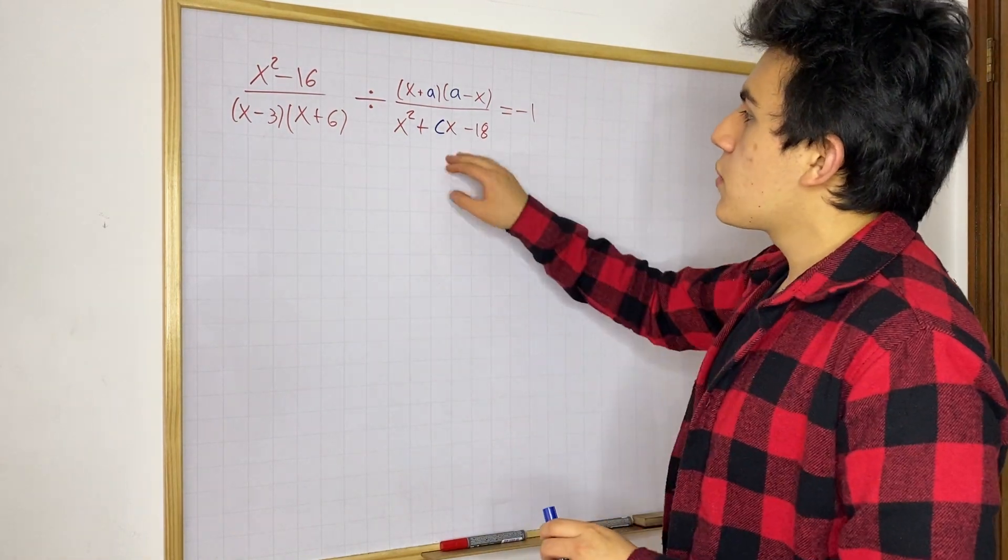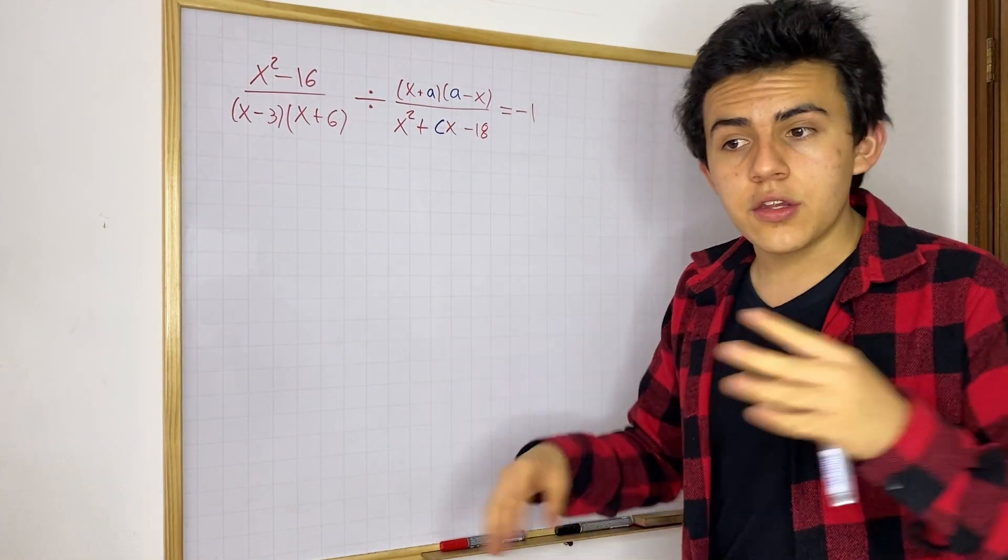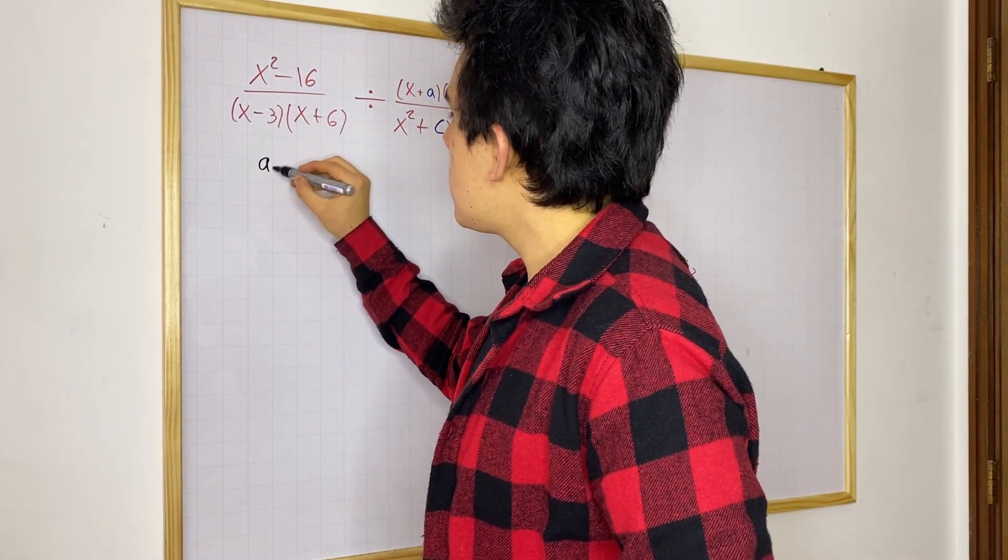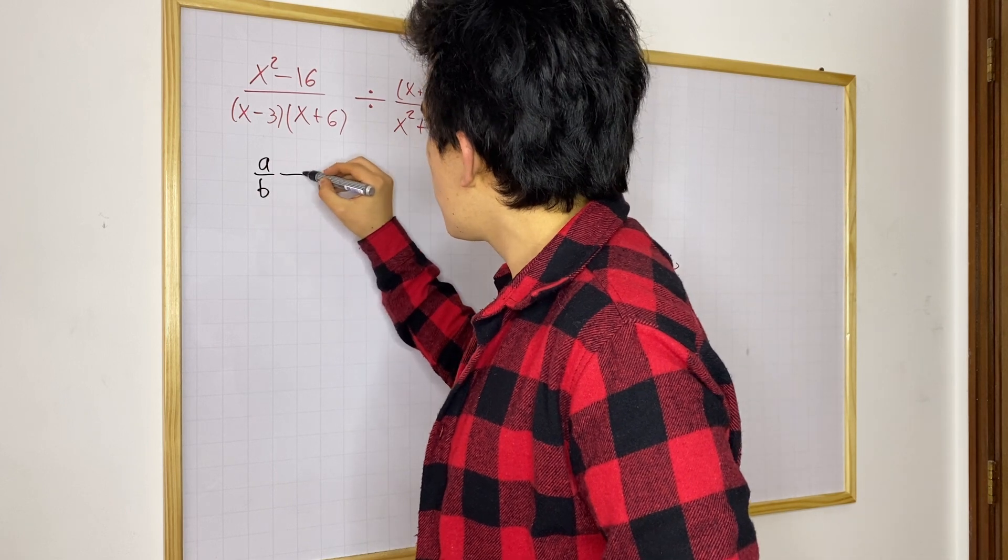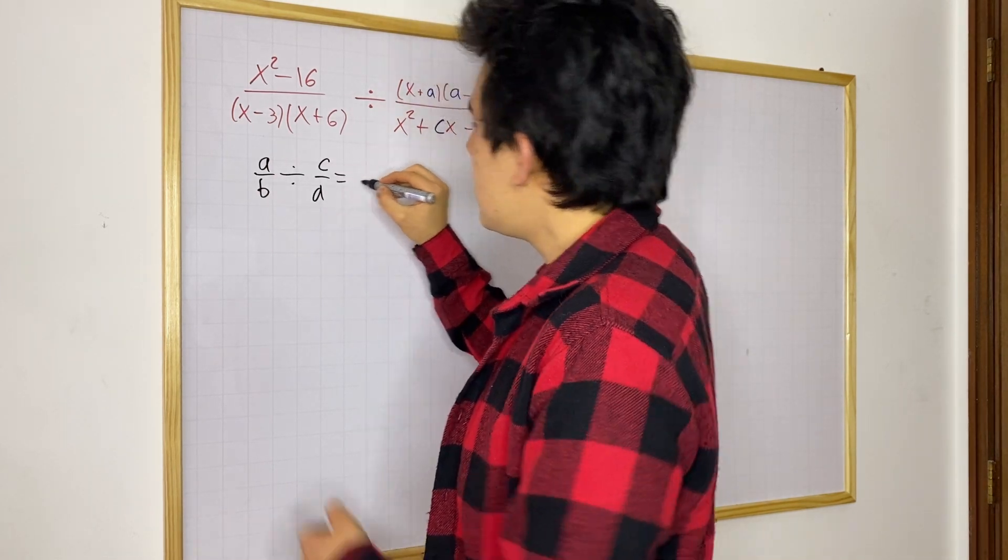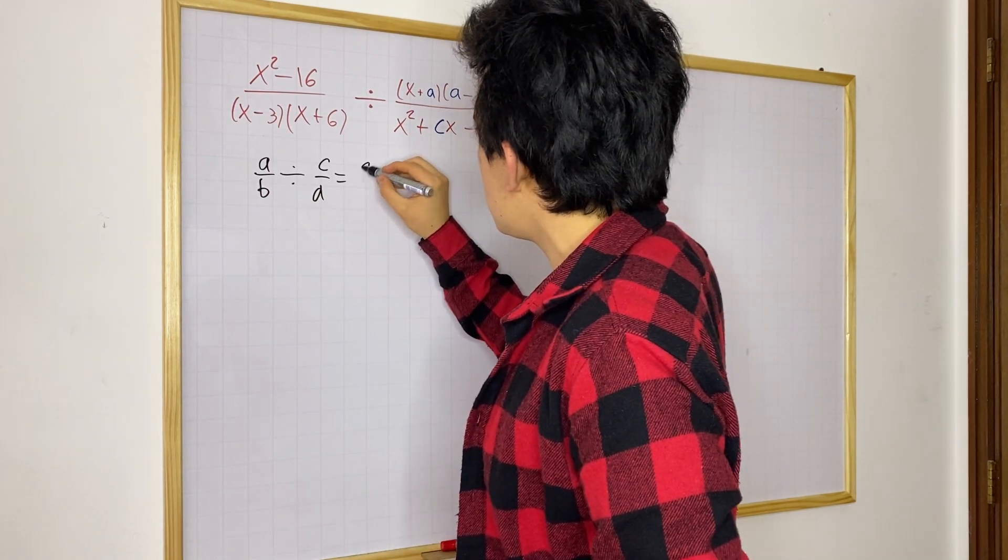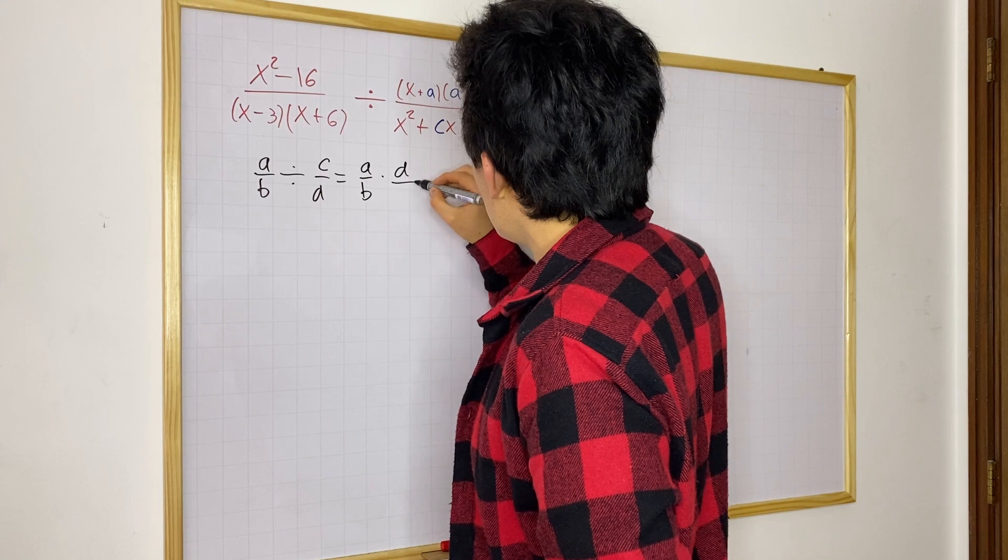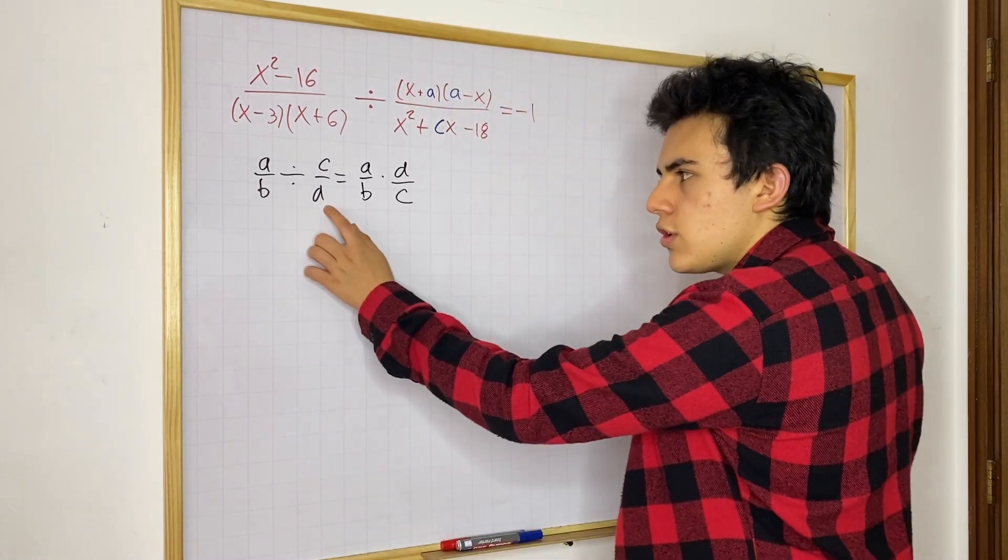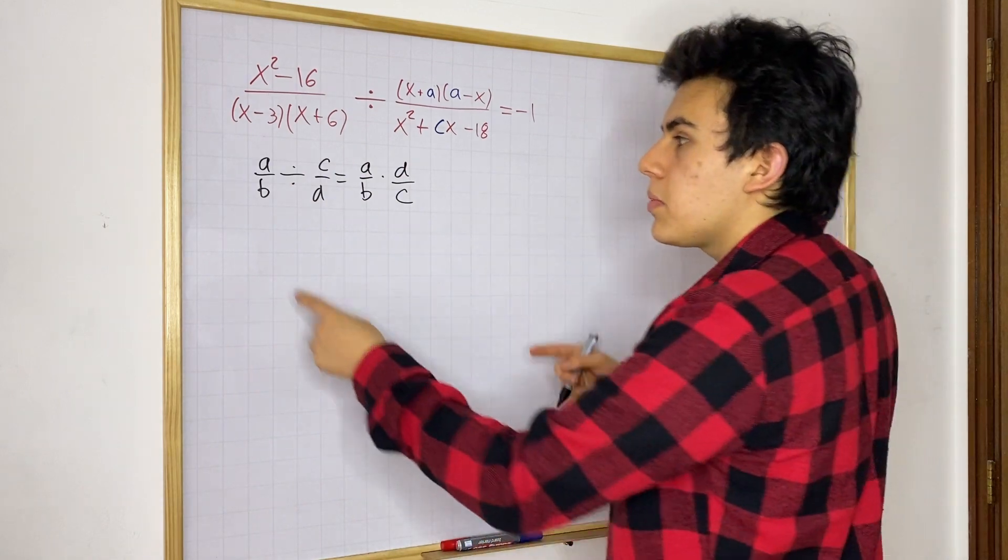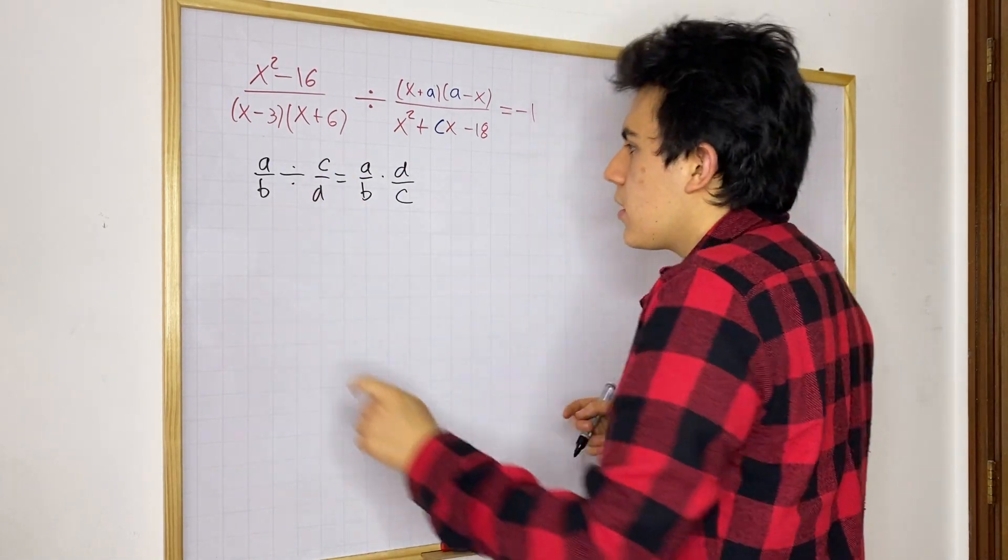So first of all, remember that if you have two fractions and you're dividing them by each other, I'm going to write this over here. If we have, for instance, A over B divided by C over D, well, this is the exact same thing as if we did A over B times D over C. You can just simply take the inverse of one of the fractions that you have and multiply it by this one. That's something you can do.